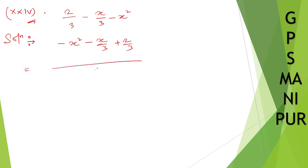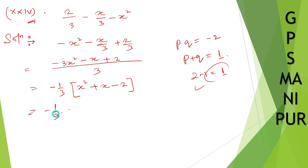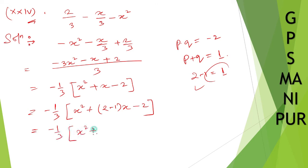Now take LCM — LCM will be 3. So: minus 3x squared minus x plus 2. Take minus 1 by 3 common. If you take minus 1 by 3 common, what is left is: x squared plus x minus 2. Now any two numbers P and Q — if you multiply P into Q it is minus 2, and if you add it is 1. So it is 2 and minus 1: 2 times minus 1 is minus 2, and 2 plus minus 1 is 1. So write: minus 1 by 3 times (x squared plus 2x minus 1x minus 2).